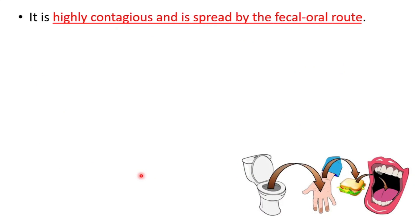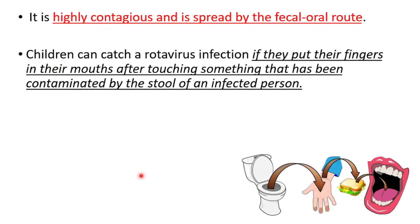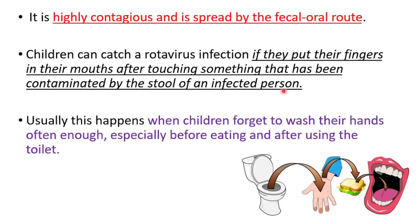Rotavirus is highly contagious and spreads by the fecal-oral route. Children can catch a rotavirus infection if they put their fingers in their mouth after touching something that has been contaminated by the stool of an infected person. This usually happens when children forget to wash their hands often enough, especially before eating and after using the toilet.